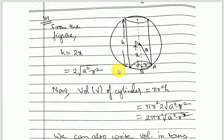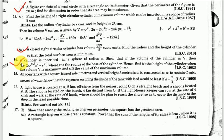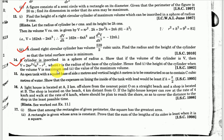Good morning children. In the previous lecture we had done till question number 13, so now let us do question 14. Before we see the solution, let us see what this question says. A cylinder is inscribed in a sphere of radius a. Show that if the volume of the cylinder is v, then v equals 2πr² times the square root of a² minus r², where r is the radius of the base of the cylinder.